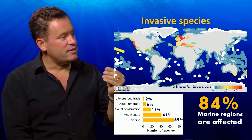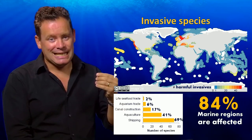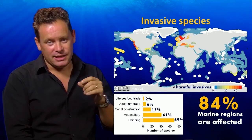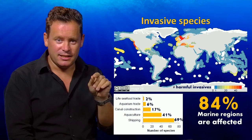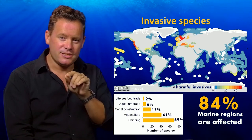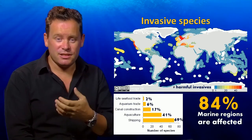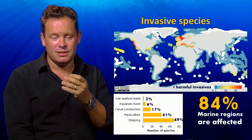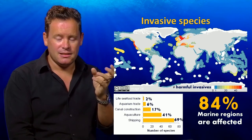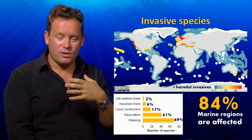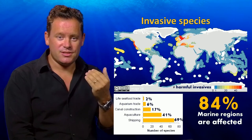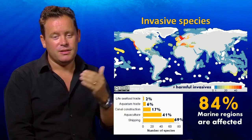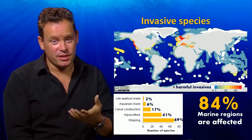Another source is the importance of canals. If you look at the Suez Canal, which links the Red Sea and the Mediterranean, there's been a whole series of fish and other organisms naturally found in the Red Sea that have undergone what's called a Lessepsian migration into the Mediterranean and are now found in the Atlantic — a consequence of our desire to increase commerce and ease maritime operations linking Europe and other parts of the world.